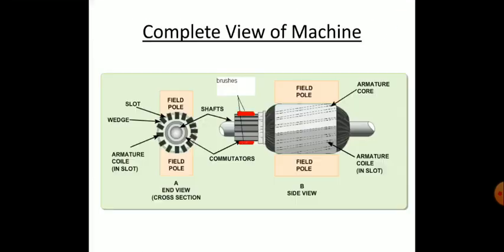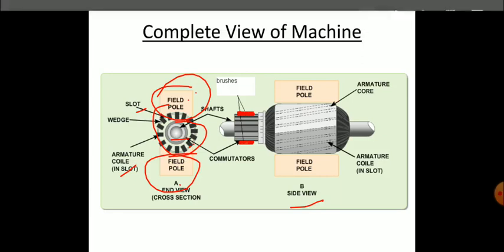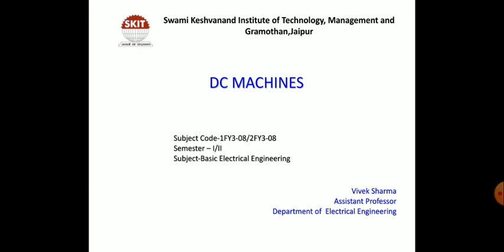The complete view of the machine shows the cross-section: the field portion, the rotating portion with wave-shaped slots, armature coils mounted in between the slots, and field coils — this is the side view. This concludes the DC machine topic. In the next chapter we will discuss other parts of the DC machine such as the EMF equation, motor torque, speed control, and other topics. Thank you students.